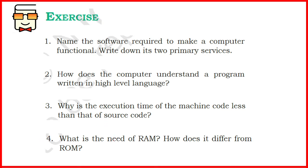The fourth question: what is the need of RAM? RAM stands for random access memory. Any program or instruction that must be executed by the computer system — specifically by the central processing unit — must be present in RAM so that the computer can access it. If the CPU needs to perform any task, that corresponding program must be present in the RAM so it can be fetched by the CPU and the instructions executed. RAM and ROM constitute two types of primary memory. ROM is read-only memory — you cannot change its contents — whereas RAM is random access memory where you can both read and write.